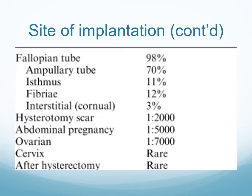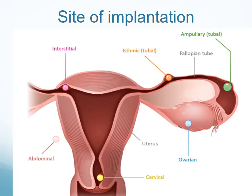Regarding the site of implantation, 98% implant in the fallopian tube. We also have hysterotomy scar pregnancy, abdominal pregnancy, ovarian pregnancy, and cervical pregnancies. Among the fallopian tube pregnancies, we have ampullary tubal pregnancy, isthmic pregnancy, interstitial or cornual, and cervical.